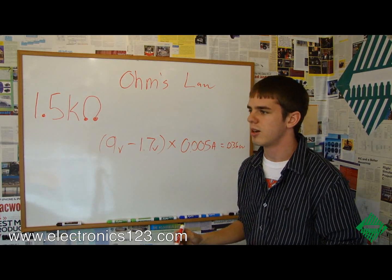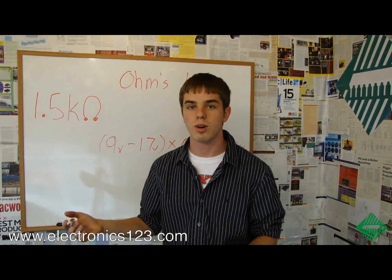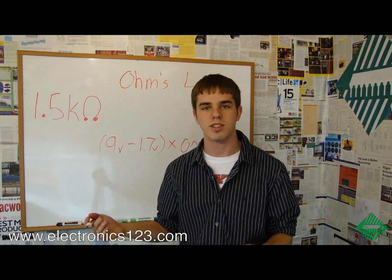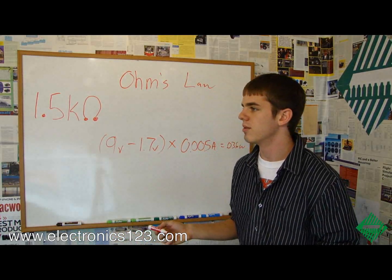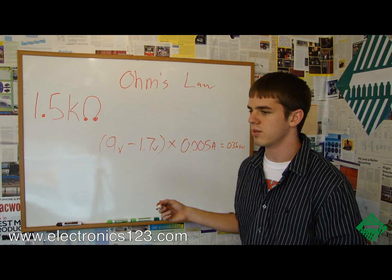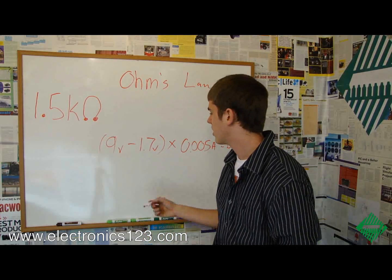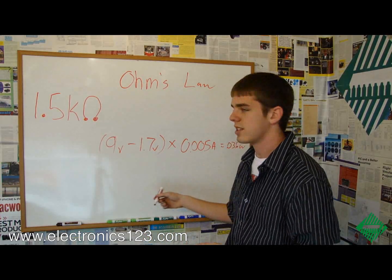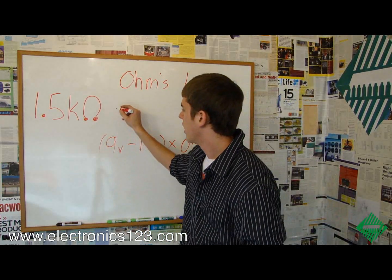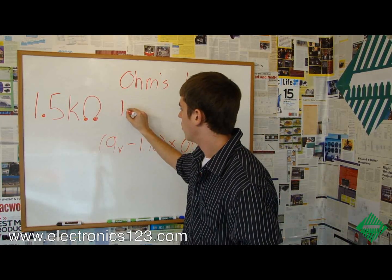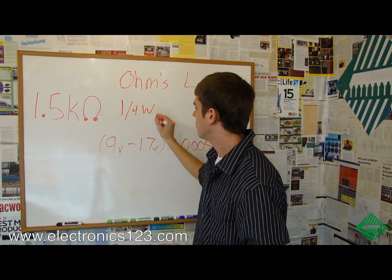0.036 is less than a quarter watt, and a quarter watt is generally the smallest resistor that you're going to use, although there are some smaller values. But this essentially tells us we can get away with using a quarter watt resistor.